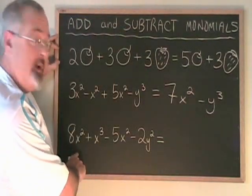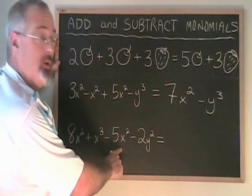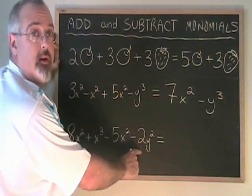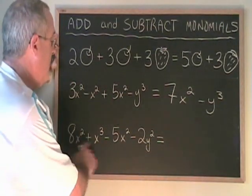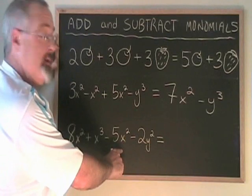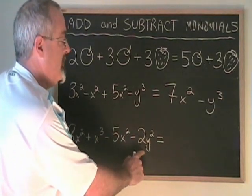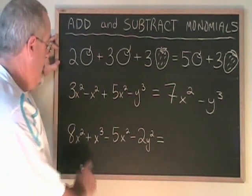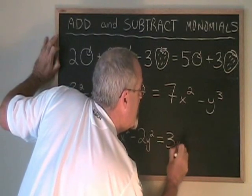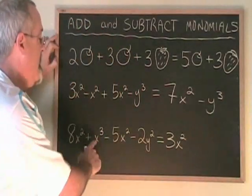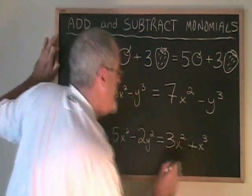In example three it says eight x squared plus x cubed minus five x squared minus two y squared. This time we have three different types of term: eight x squared minus five x squared, only one x cubed term, and only one y squared term. Let's combine our x squared terms: eight x squared minus five x squared equals three x squared. The plus x cubed is kept separate.